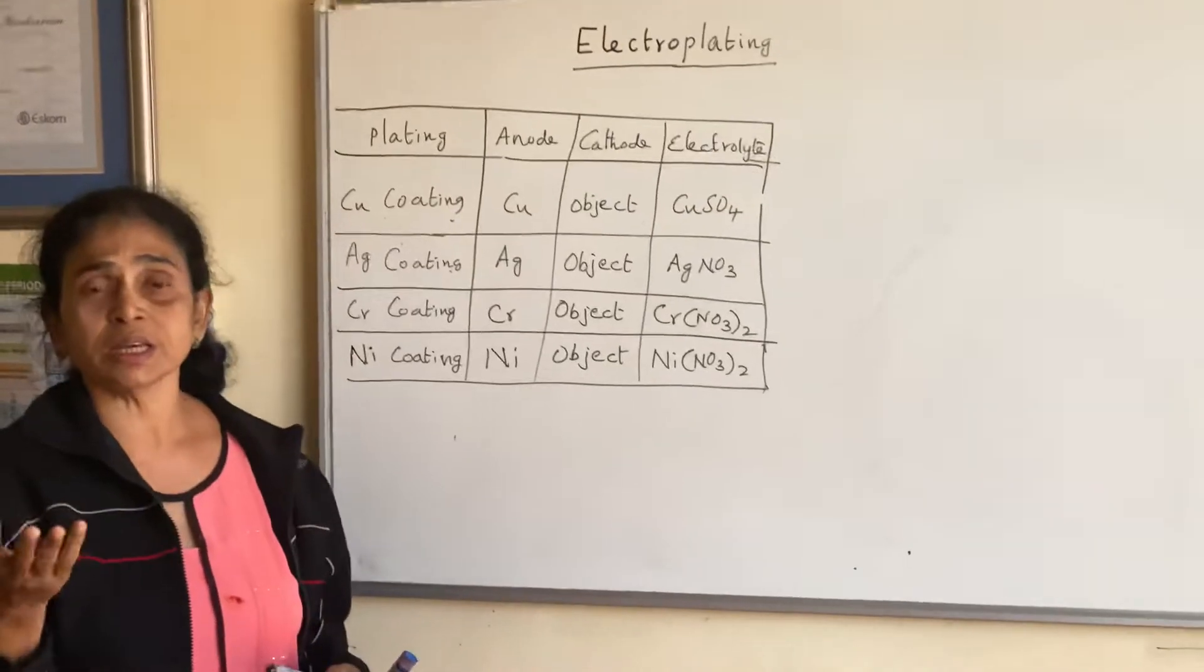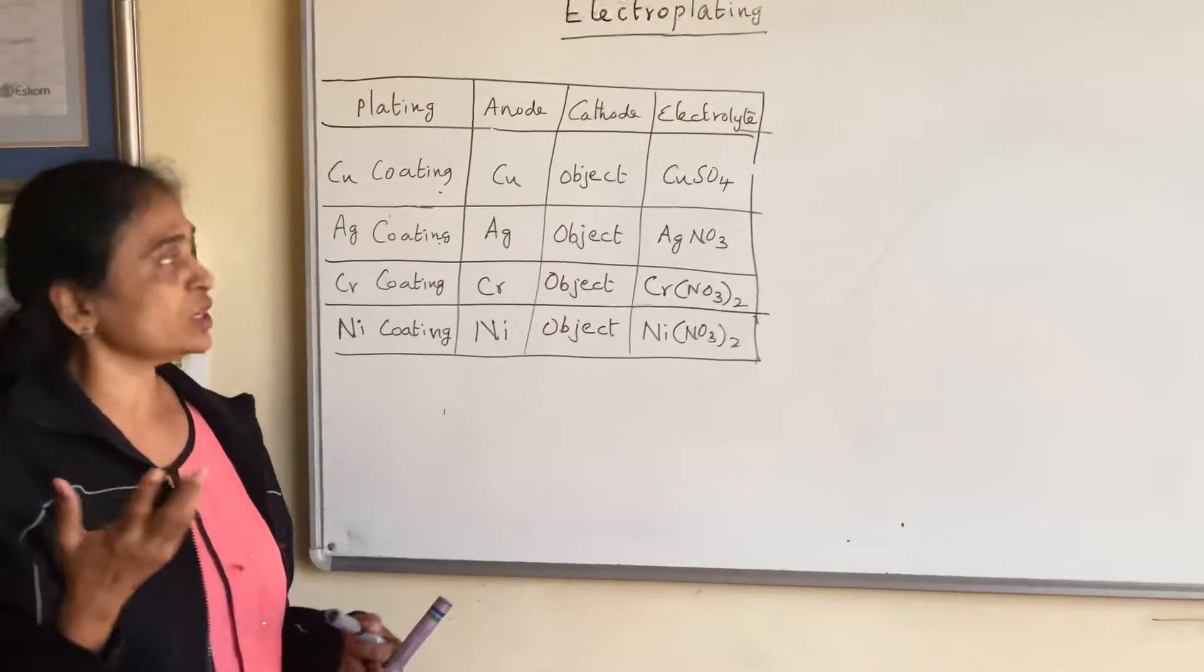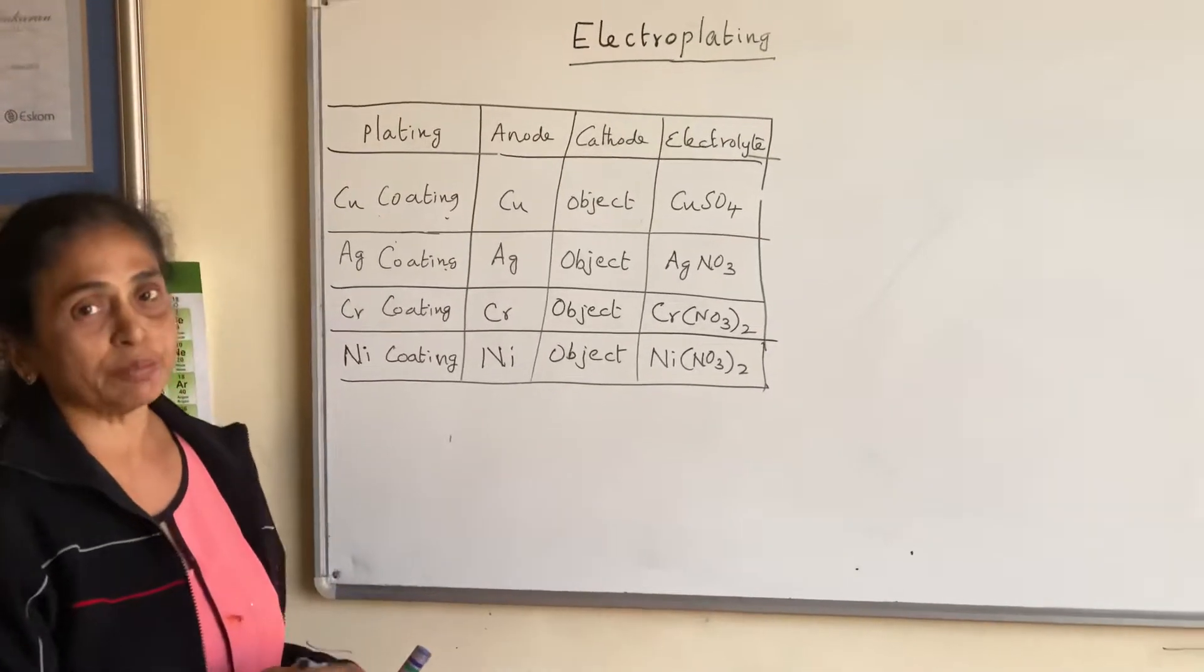Silver coating is done in most of the cups, saucers, spoons and everything. They are coated with silver to have a beautiful appearance.